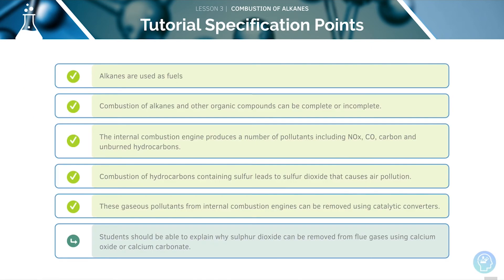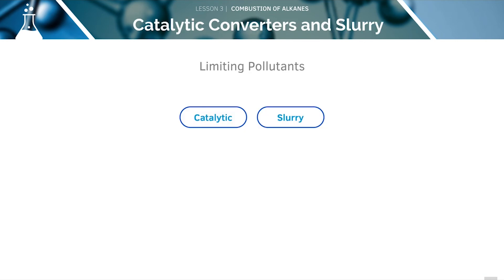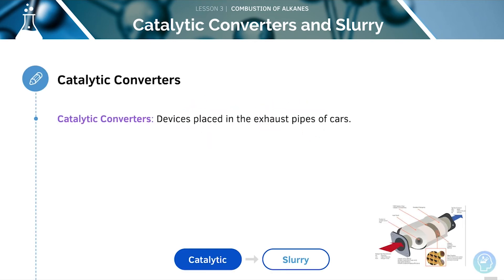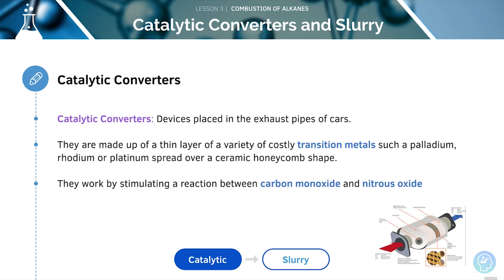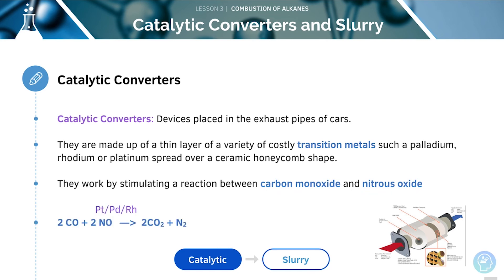Finally, we'll look at how to remove sulfur dioxide from flue gases. We can limit the damage caused by these pollutants by using catalytic converters and slurry. Catalytic converters are devices which can be placed into the exhaust pipes of cars. These are made up of a thin layer of a variety of costly transition metals, such as palladium, rhodium, or platinum, spread over a ceramic honeycomb shape. They work by stimulating a reaction between carbon monoxide and nitrous oxide, as we can see here.